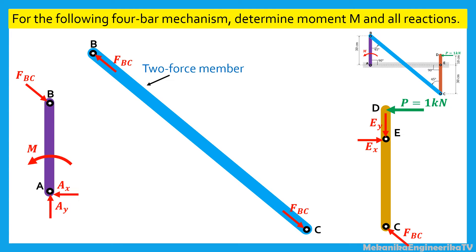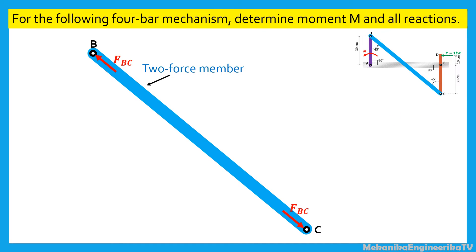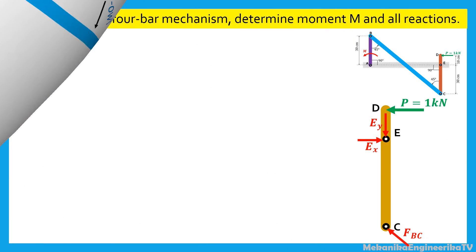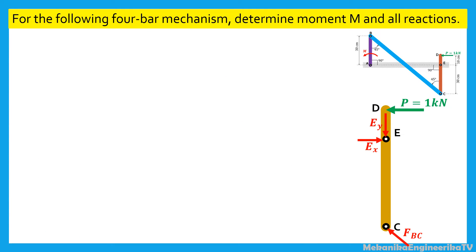We have completed the free body diagram of the three bars AB, BC, and CED. Now it is possible to move to write the equilibrium equations of these bars. For the bar BC, the equilibrium equations — the forces and moment equations — are identically fulfilled. Considering the bar CED, it is possible to write three equilibrium equations. The equilibrium of forces along the horizontal direction gives: EX minus FBC times cosine 45 degrees is equal to 1000 Newtons.